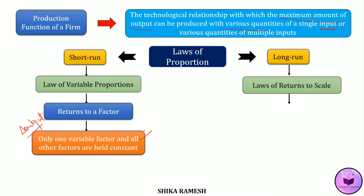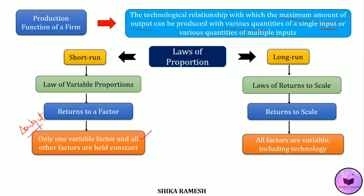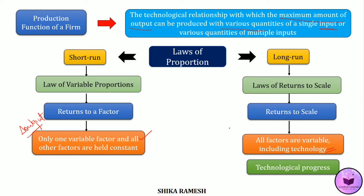In the long run, all factors become variable including the technology. So the increase in total output with respect to increase in all the factors of production in the same proportion is what is called returns to scale.